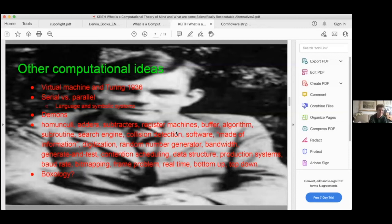Here's a list that one can tease out of his list of good ideas from reading Consciousness Explained in a cursory way and all kinds of other things. Homunculi, adders, subtractors, register machine, buffer algorithm, subroutine, search engine, collision detection software, made of information. Information by itself is not useful, so I concatenate it with the others. Digitalization, random number generator, bandwidth, generating test, contention scheduling, data structure, production systems, data, baud rate, bit mapping, frame problem, real time, bottom up, top down.